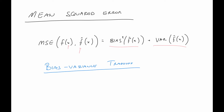There is something called the bias-variance trade-off. As the bias increases, the variance decreases. If an f-hat is more biased it's going to be less variable. But the trick is that as one goes up and the other goes down, they don't occur at the same rate, so we need to manipulate this relationship to get a good model.